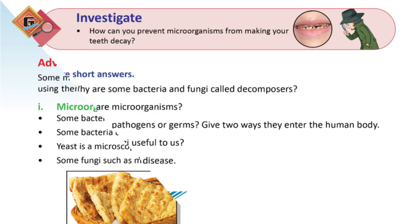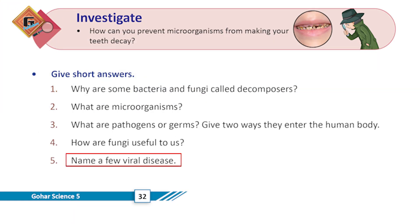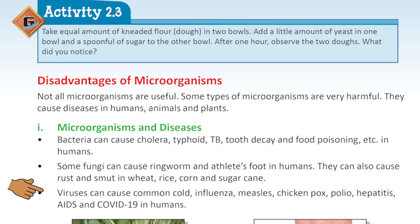Name a few viral diseases. You have to remember that we have talked about polio and COVID-19 — these are all diseases spread by viruses. We have also talked about diseases like measles, mumps, and chickenpox mentioned in the book. So remember these viral diseases that we have read about.